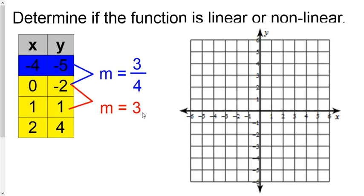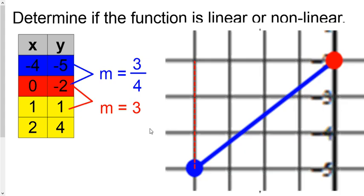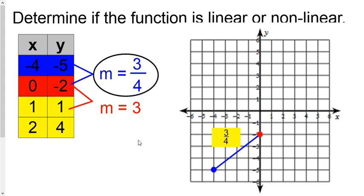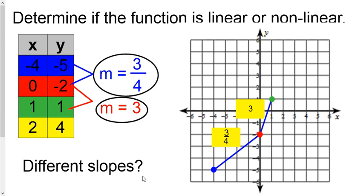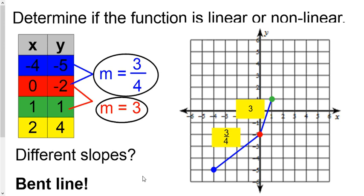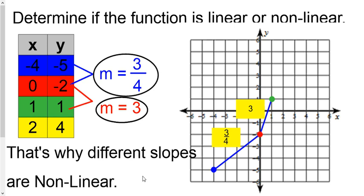Why does this work? Let's graph negative four, negative five — it's right here — and then zero, negative two. The line between these two dots has a slope of three-fourths: up three and to the right four. But when we go to graph the third point — remember, using the red and green dots we got a slope of three — let's graph that green dot and see how it's going to bend the line. If that line is bent, it is not linear. Different slopes bend the line, making it non-linear.